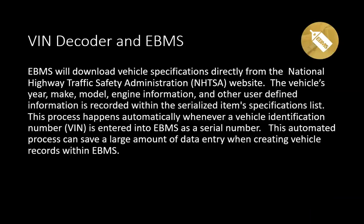The VIN decoder allows EBMS to download vehicle specifications directly from the National Highway Traffic Safety Administration, or NHTSA, website. The vehicle's year, make, model, engine information, and other user-defined information is recorded within the Serialized Item Specifications list, which is a tab within the Serialized Item Record. This process happens automatically whenever a vehicle identification number or VIN is entered into EBMS as a serial number, and can save a large amount of data entry when creating vehicle records.